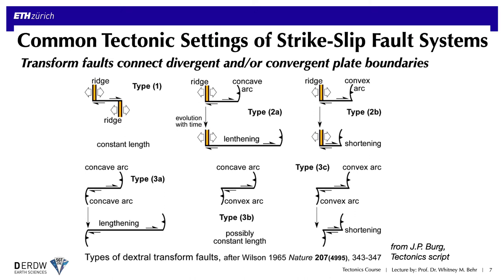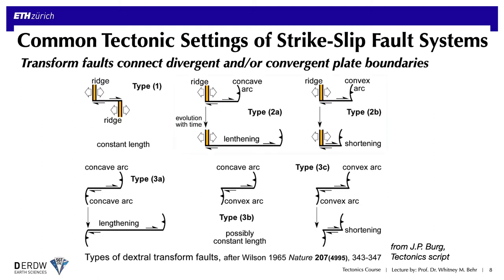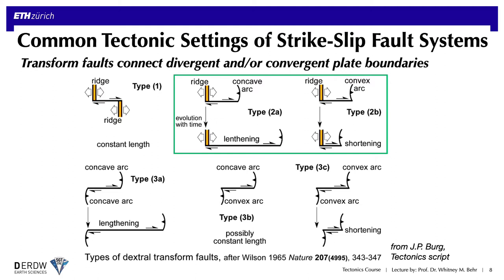Tuzo Wilson in that paper broke down dextral transform faults into further categories distinguished by their time evolution — whether they're lengthening, shortening, or remaining stable over time. Ridge-ridge transforms should be constant length over time, but ridge-trench transforms could either lengthen or shorten depending on the polarity of subduction. The teeth drawn here are on the hanging wall of the subduction zone. If the transform is in the hanging wall it will lengthen as the trench rolls back, whereas if it's in the footwall it will gradually be consumed and shorten.